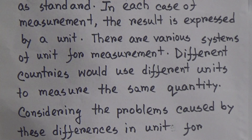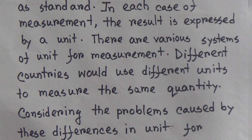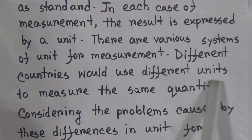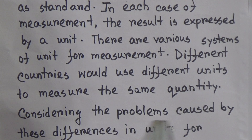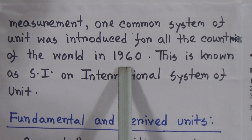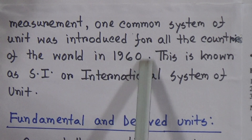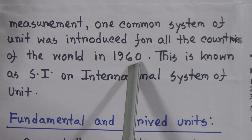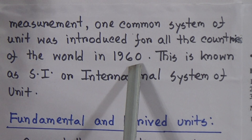Normally we use SI system, MKS system, and CGS system for measurement. Different countries would use different units to measure the same quantity. Considering the problems caused by this difference in unit for measurement, one common system of unit was introduced for all the countries of the world in 1960. In 1960, a worldwide same type of measurement system was established, and if you consider any length as 1 meter, then worldwide it will be considered as 1 meter.